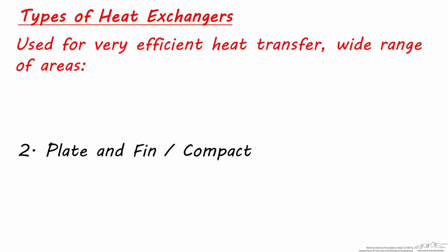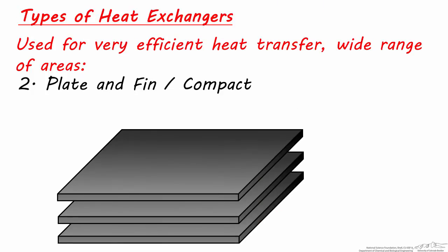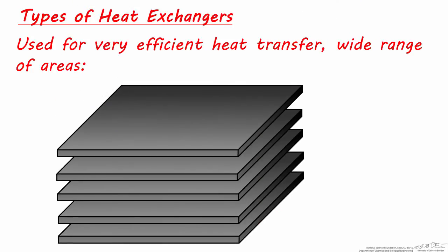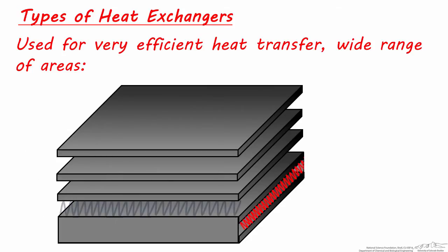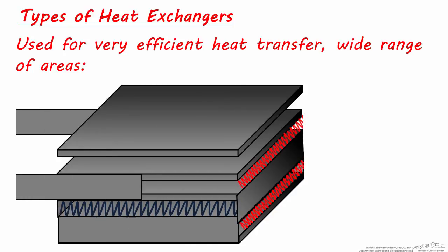Let's look at how the plate and fin heat exchanger functions. This heat exchanger, much like a plate and frame, is comprised of separate plates. However, in this case there are no holes in the plates, but there are corrugated spacers or fins between the plates, arranged in an alternating 90 degree pattern.